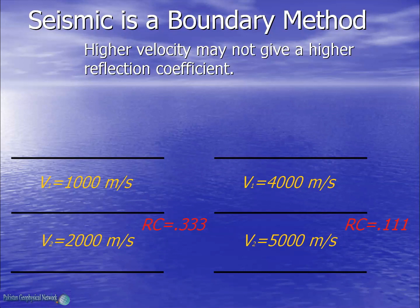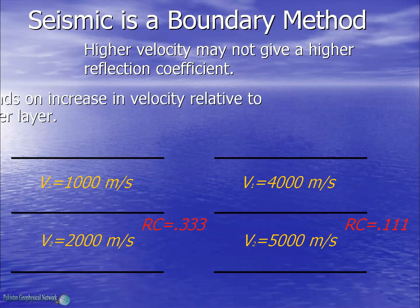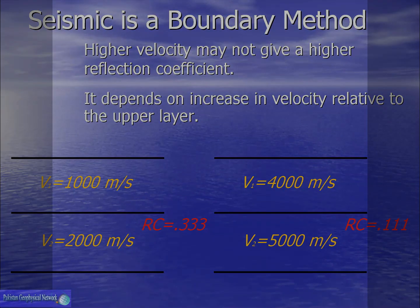Actually, it is not the higher velocities, but the percentage increase of the second layer's velocity in comparison with the top layer velocity, that is going to control the reflection coefficient. In this way, we have seen that seismic is a boundary method as compared to the other geophysical methods.